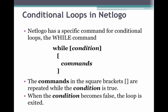In the second set of square brackets, you would list the commands that you want executed while the loop is looping. So, the conditional statement in the first set of square brackets must be true in order for the commands to be executed. Once that conditional statement becomes false, the loop is exited.